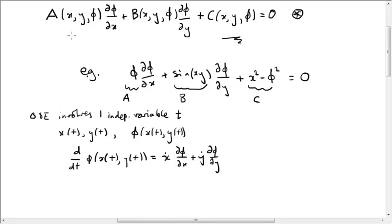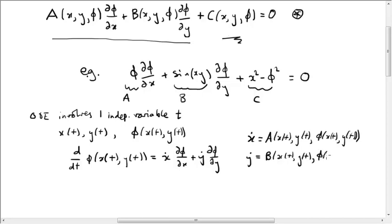And this looks remarkably similar to the first two terms of equation star. That is, if we took x dot equal to A of x of T, y of T, phi of x of T, y of T, and y dot equals B of x of T, y of T, phi of x of T, y of T, then this becomes exactly A times d phi by dx plus B times d phi by dy.